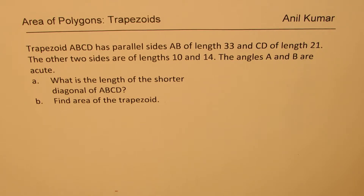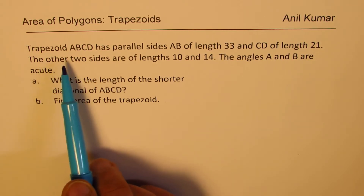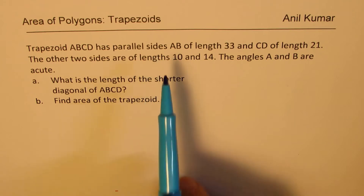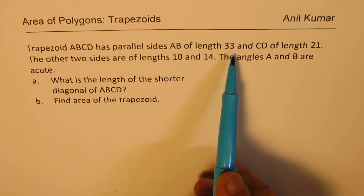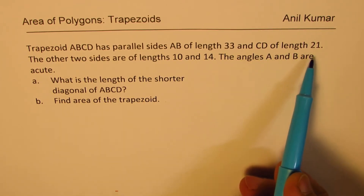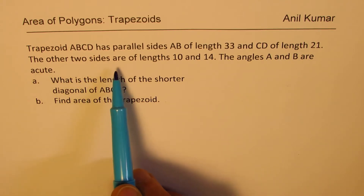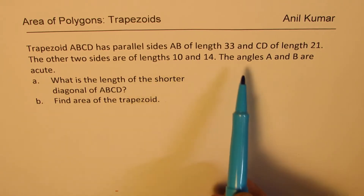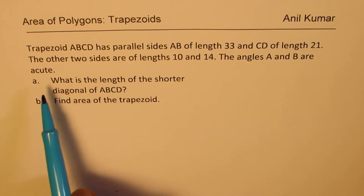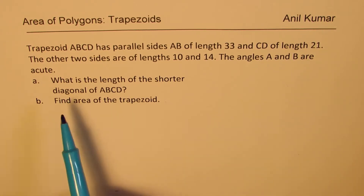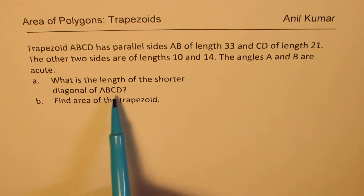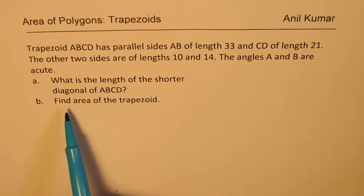The question is: trapezoid ABCD has parallel sides AB of length 33 and CD of length 21. The other two sides are of lengths 10 and 14. Angles A and B are acute. What is the length of the shorter diagonal of ABCD? I've added: find the area of the trapezoid as well.